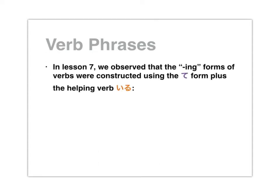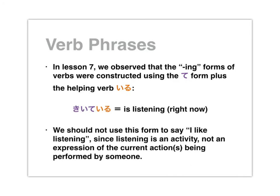In Lesson 7, we observed that the -ing forms of verbs were constructed using the te-form plus the helping verb iru. This short phrase, kiiteiru, tells us that someone is listening right now as we speak — the present tense, the -ing form in English. However, we should not use this form to say 'I like listening,' since listening is an activity and not an expression of current actions being performed.